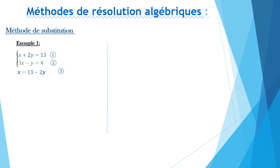Puis, on remplace le X dans la deuxième équation. On trouve 3 facteurs, 13 moins 2Y moins Y égale à 4. Donc voilà, on a trouvé une équation avec une seule inconnue. Et là, on détermine le Y. Y vaut 5.